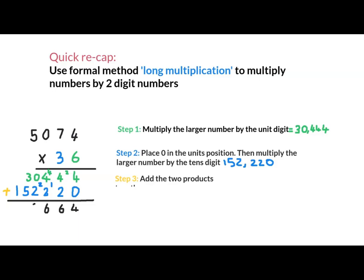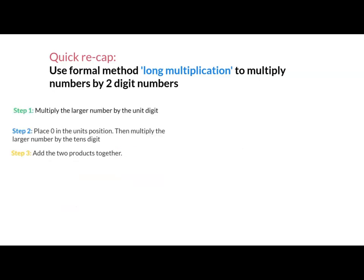8 and 1, 1, 2, 3 comma. Long multiplication is just about following those 3 steps. Multiply the larger number by the units digit.